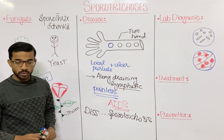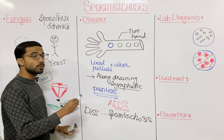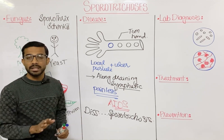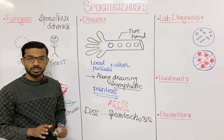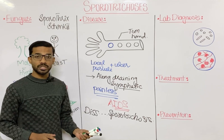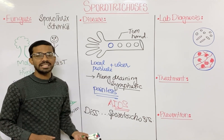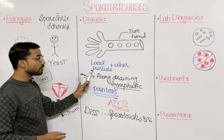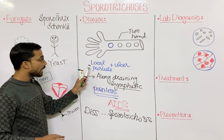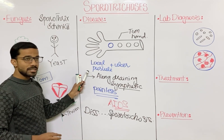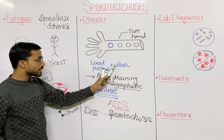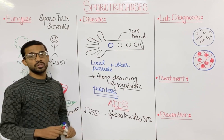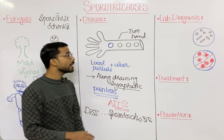To summarize: in immunocompetent patients you will never see disseminated sporotrichosis, but in immunocompromised patients you can. The initial presentation includes local pustules and ulcers, along with lesions along the draining lymphatics.